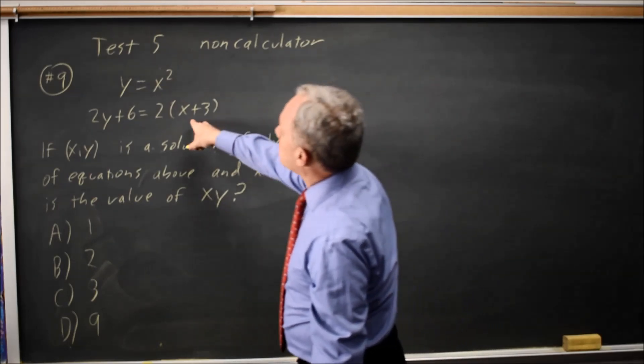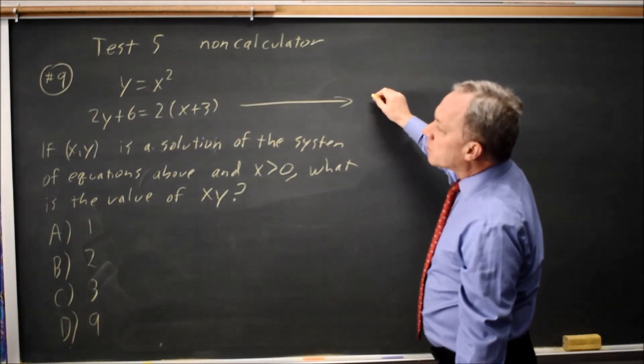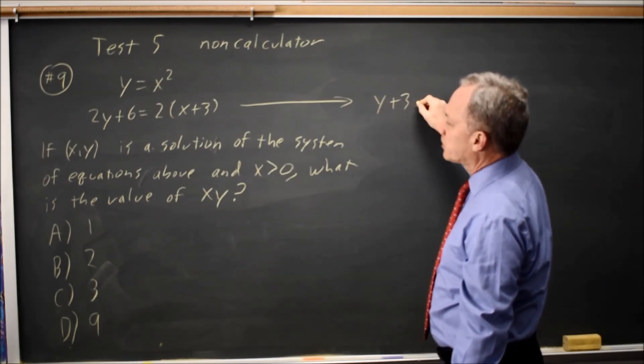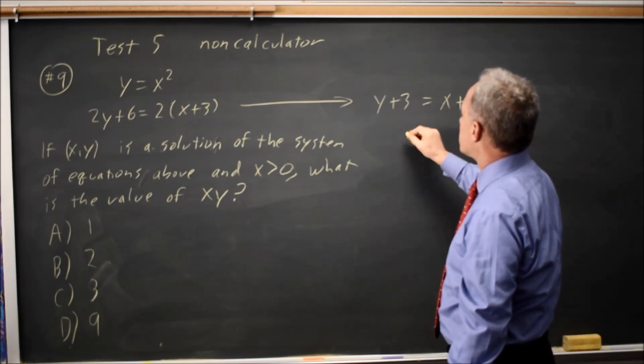To do this, I'm going to look at the second equation. Divide both sides by 2, and I get y plus 3 on the left, and x plus 3 on the right.